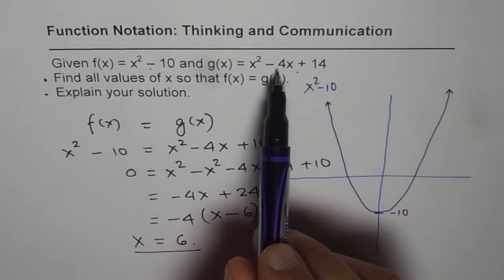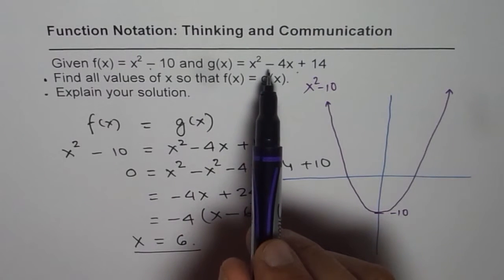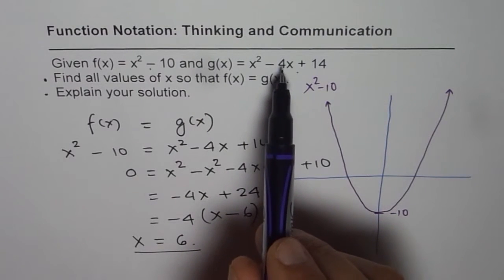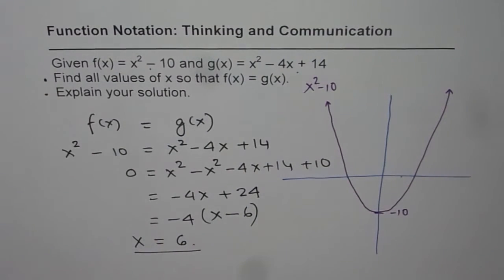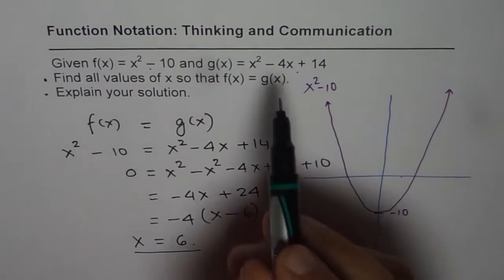The vertex will be at minus b by 2a which is 4 over 2. So it is at approximately 2. That is a minimum value.